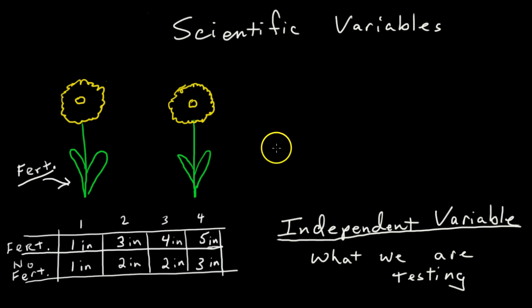The next variable is called the dependent variable. And the dependent variable is that characteristic that we're measuring. So in this case, every week we're going to go out and we measure the growth of the flower. And you see here on the data table that we went out every week and measured its growth.